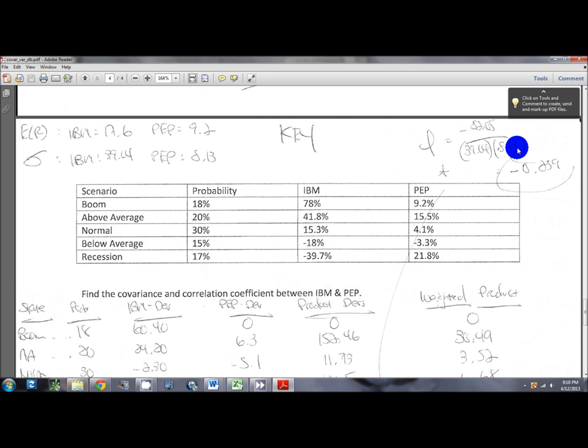To find the correlation coefficient, you simply take that covariance and divide it by the product of the standard deviations. Since we did this one using percents, you have to use percents down here. Otherwise, your answer will not be correct. If you use a percent up here, but then you throw in some decimals down here, you're not staying consistent with your unit of measure, and so this will not be accurate.